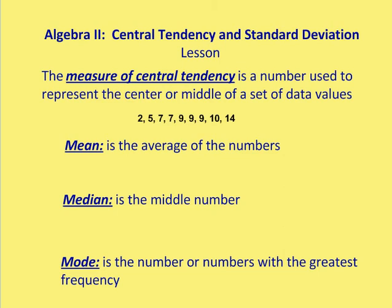There are three different ways to calculate central tendency. The first is the mean, which is typically what people refer to as the average. Then there's the median, which is the middle number of the set. And the mode is the number or numbers with the greatest frequency.